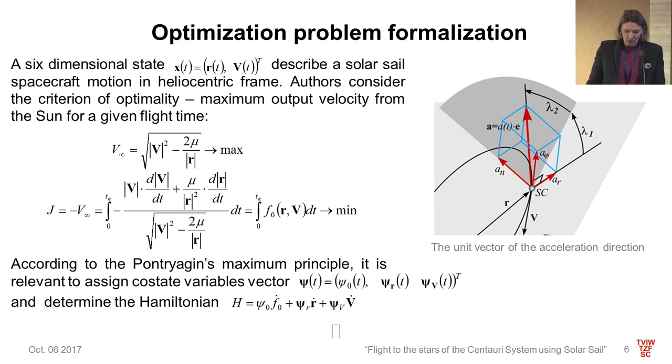We consider the criterion of optimality, maximum output velocity from the sun for a given flight time. So, the problem of mission optimization is formulated as follows. We need to determine the vector of controlled functions which provides the minimum criterion, the transversality condition, and the predetermined flight duration. According to Pontryagin's maximum principle, we shall assign the vector of co-states relevant to all elements of states. Then it is necessary to determine the Hamiltonian and to create the mathematical model of controlled motion.